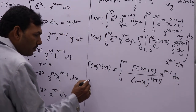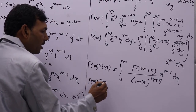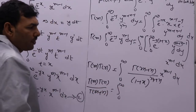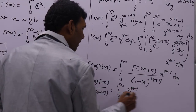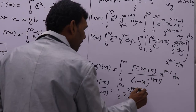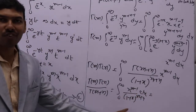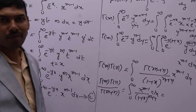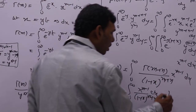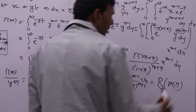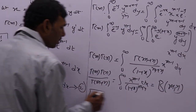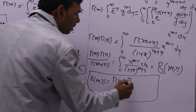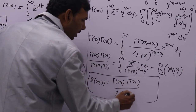Taking gamma(m plus n) to this side: gamma(m) into gamma(n) by gamma(m plus n) equals integral 0 to infinity, x to the power m minus 1 by (1 plus x) whole to the power m plus n, dx. We know one of the beta function forms — form 2 of the beta function: integral 0 to infinity, x power m minus 1 by (1 plus x) whole to the power m plus n dx is also called beta(m, n). Hence proved. Beta(m,n) equals gamma(m) into gamma(n) by gamma(m plus n).